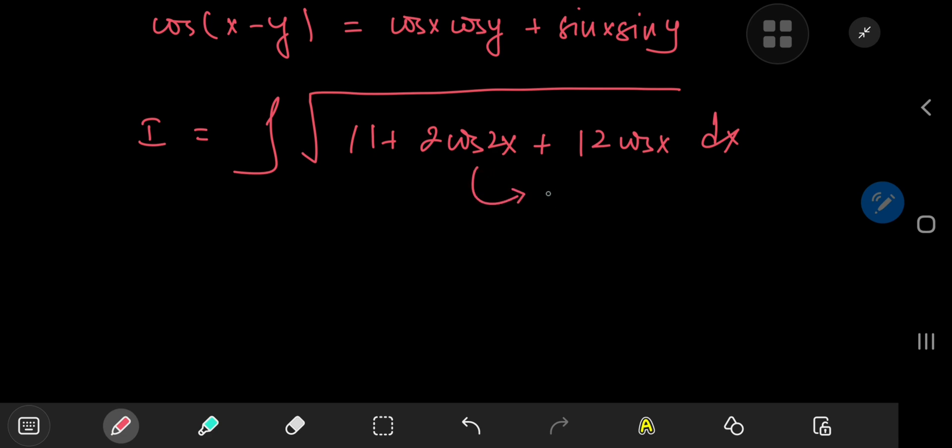And cosine 2x can be expanded using the double angle formula as 2 times the squared cosine of x minus 1. So we have the integral of the square root of multiplying out by 2, we have 4 times the squared cosine.